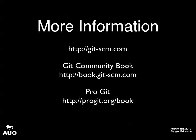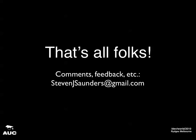For more information, gitscm.com is the homepage for Git, and you can reach the Git Community Book from there — I recommend it, it's great when you need to look up how to do something. ProGit is another book — you can buy a dead tree version, but the full contents are available online at progit.org. And finally, 'Why Git is Better Than X' — if you need to argue with people about why Git is better than their VCS, that's a good place to go. Thank you very much.